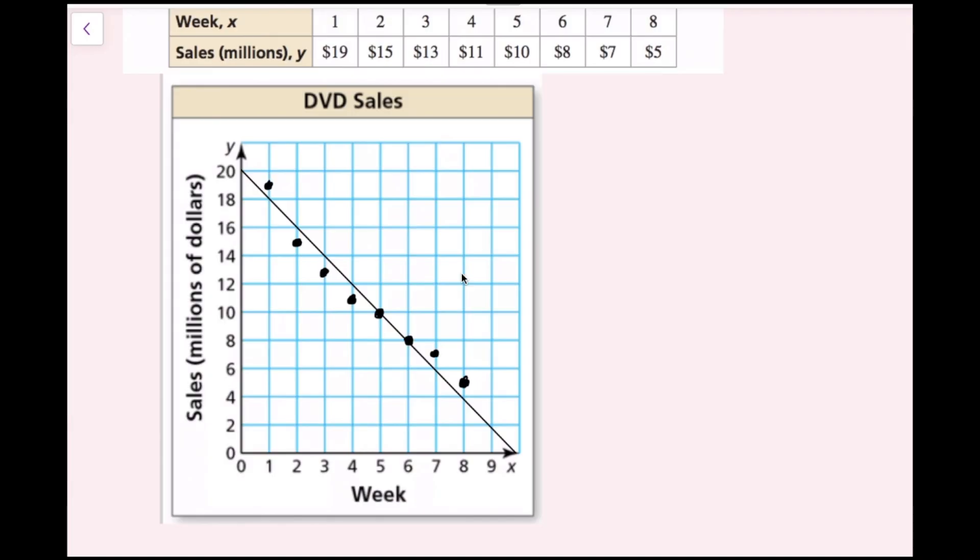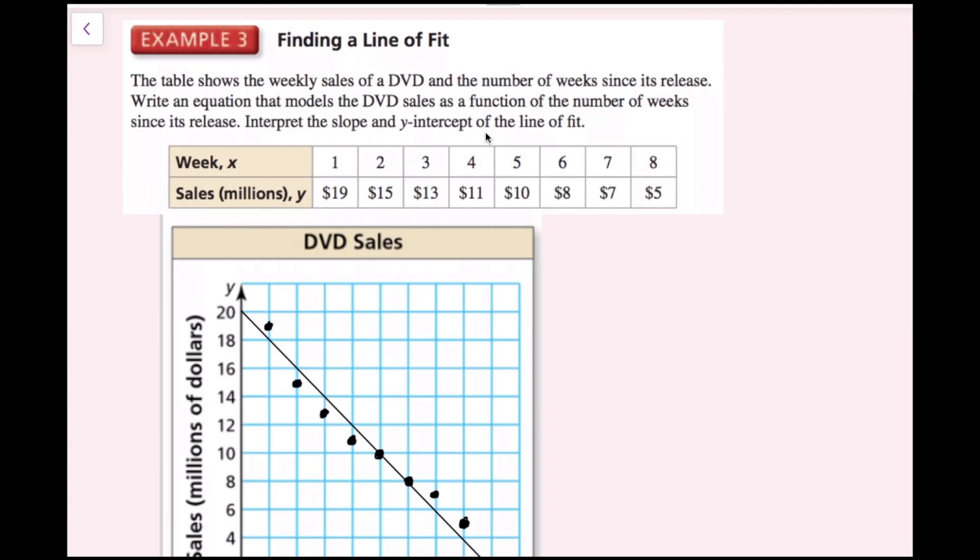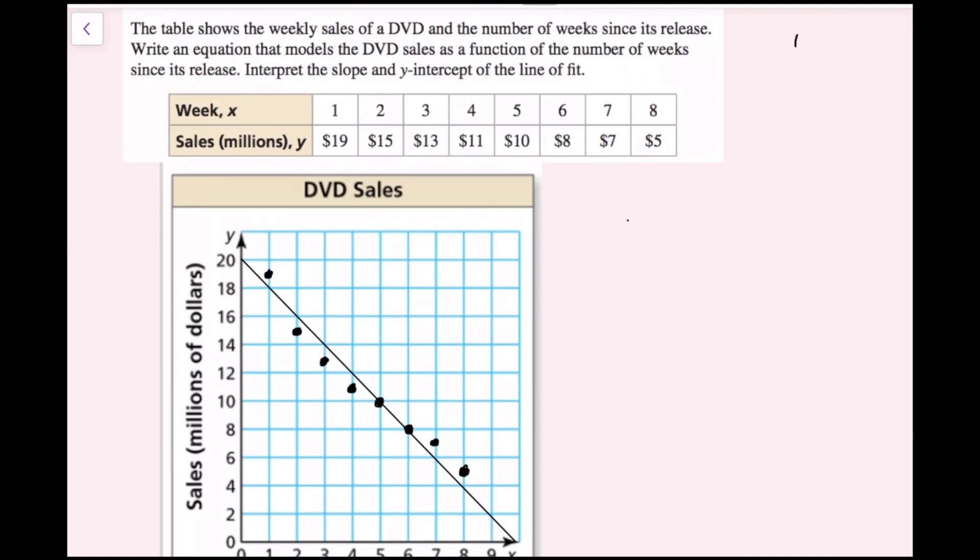Now that I've drawn my line of fit, I need to write an equation of this line. I want to find two points on the line. These points do not need to be in the data set, they need to be on the line. I see that in theoretical zero weeks I would have sold 20 million dollars. So I'm going to use this ordered pair 0 comma 20. And then I have this ordered pair right here which is 5 comma 10.